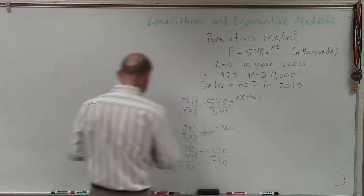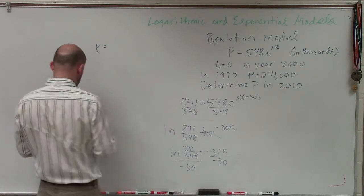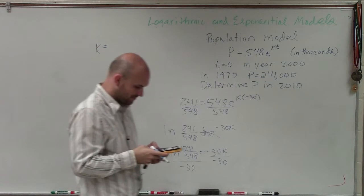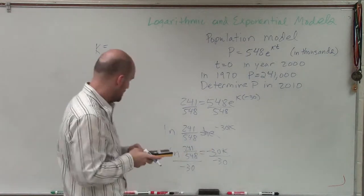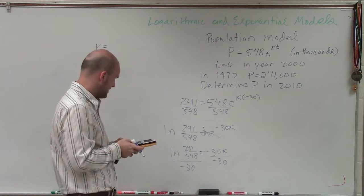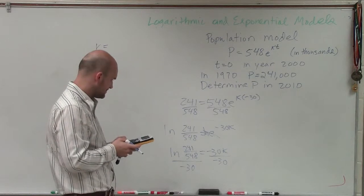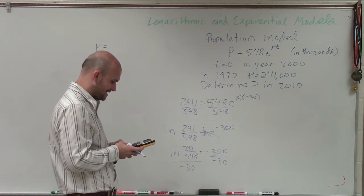So therefore, k equals - and what I'll do is take the ln of 241 divided by 548 and divide that number by negative 30.